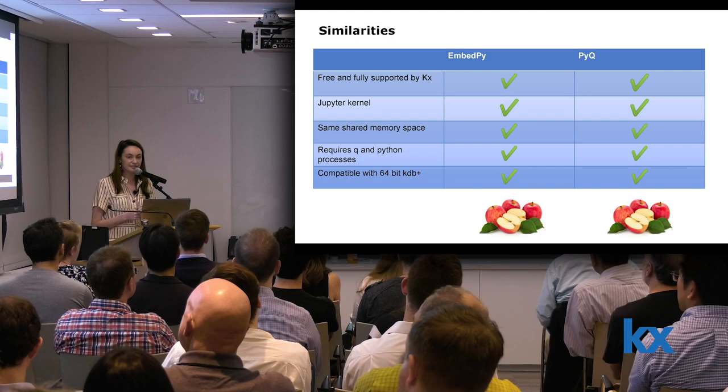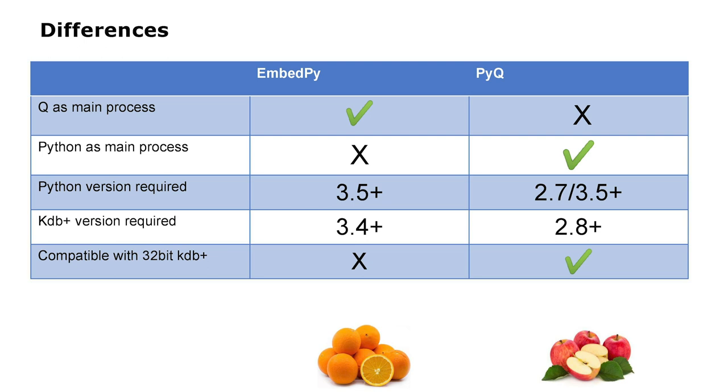Some of the differences: with Embedpy, Q is your main prompt, so in your console you would be writing Q and importing some Python functions with Q syntax. So it would be more comfortable for Q programmers. PyQ is the mirror image — you would be programming in Python primarily and then using some Q code.